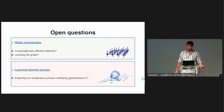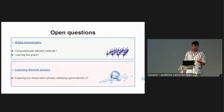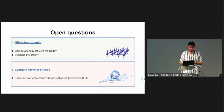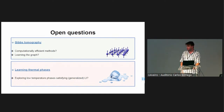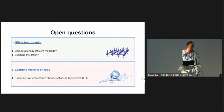To conclude, important open problems include how to run the Gibbs state learning part in a computationally efficient way, and how to relax the strong assumptions on the classes of states we are considering.